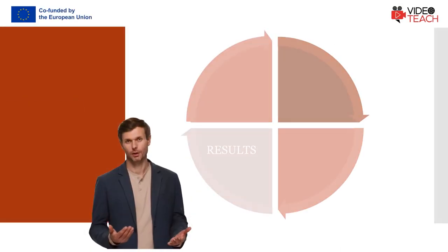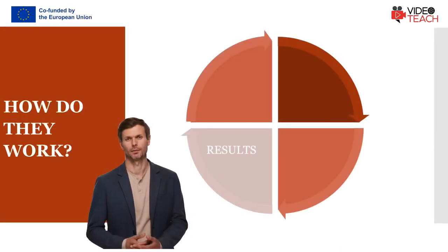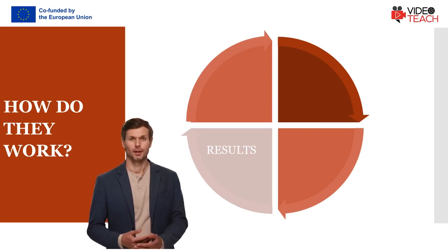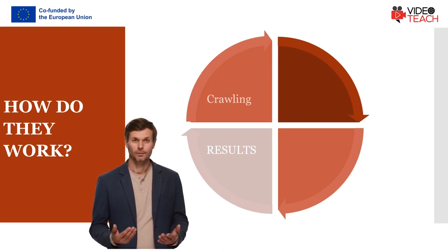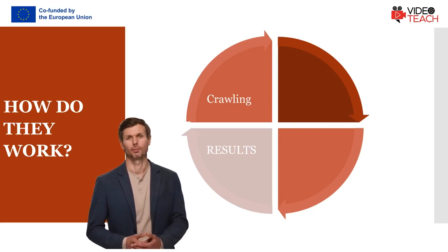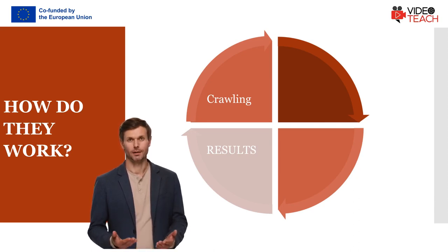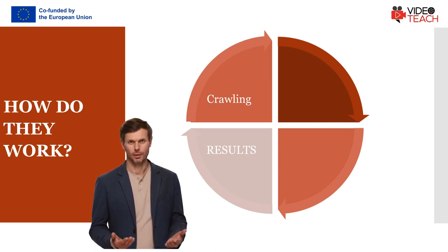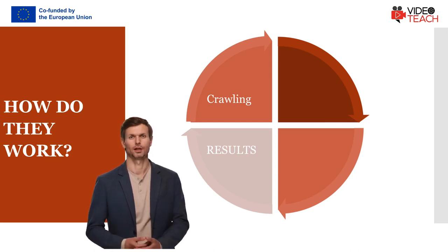Google is the most used internet search engine. Google search takes place in three stages. First, crawling. Crawlers discover what pages exist on the web. A search engine constantly looks for new pages to add to its list of known pages. Once a page is discovered, the crawler examines its content. The search engine uses an algorithm to choose which pages to crawl and how often.